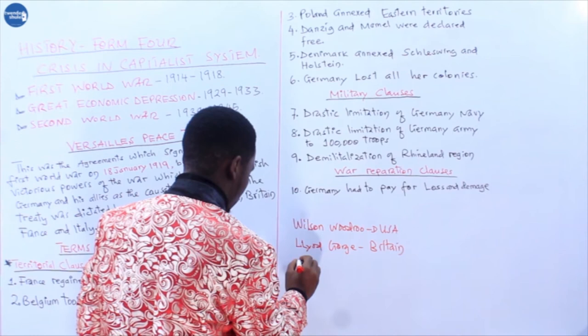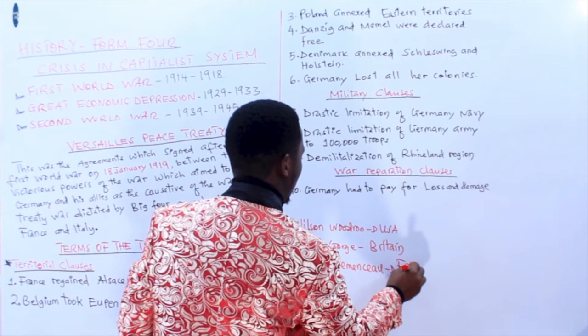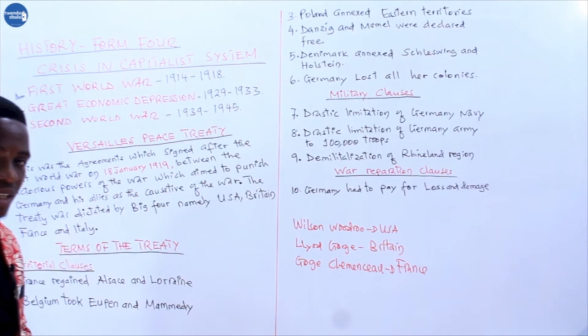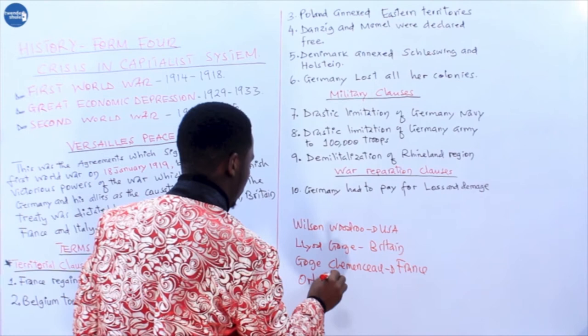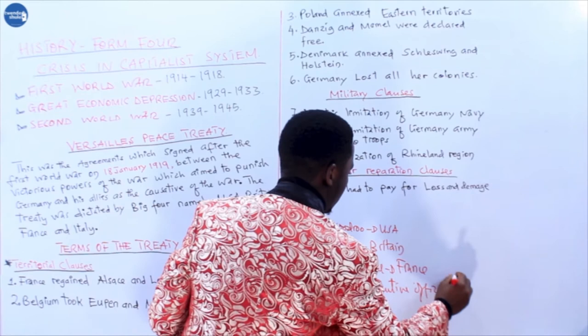France was represented by George Clemenceau, who was the prime minister of France at that time. Then on the side of Italy, Italy was represented by Orlando, who was the executive officer of Italy.